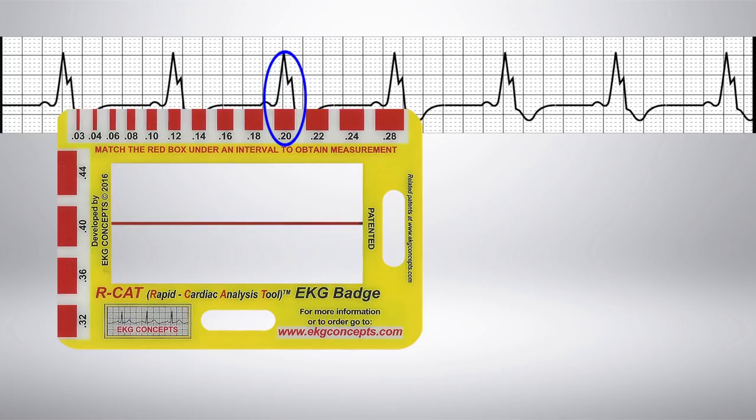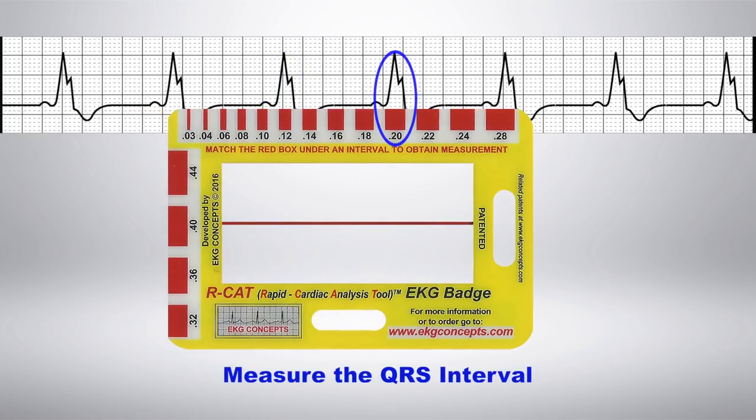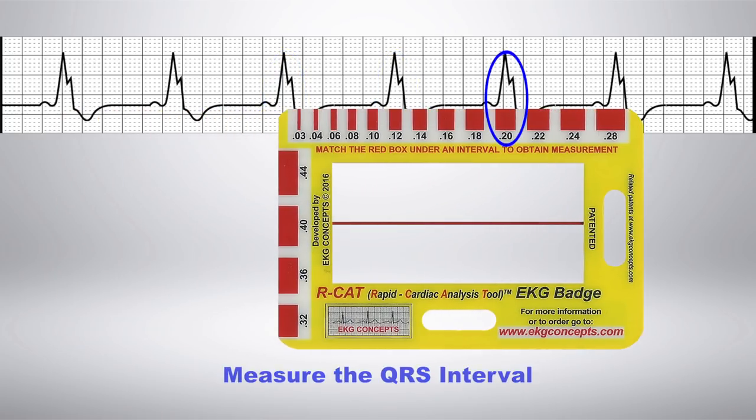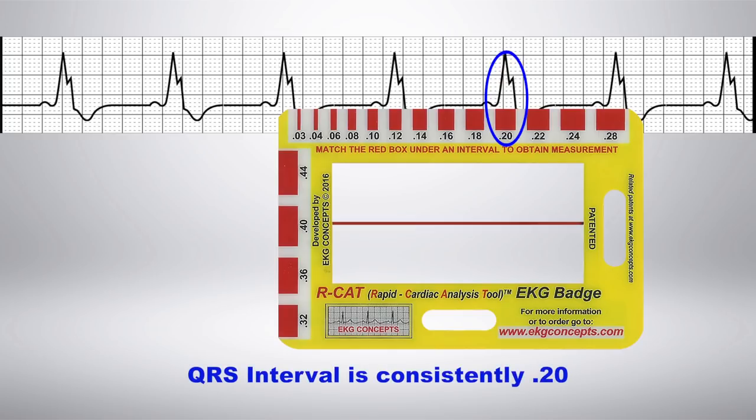Next, slide the EKG badge over and measure the QRS intervals. You have a QRS interval that's consistently 0.20.